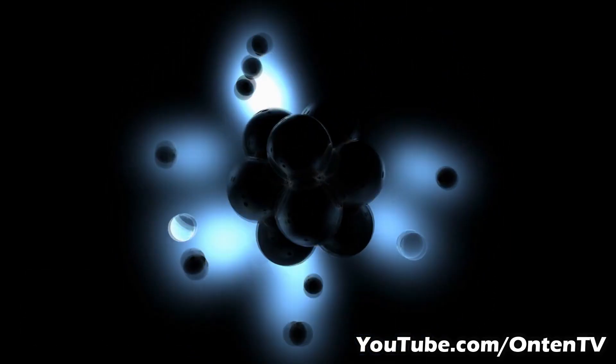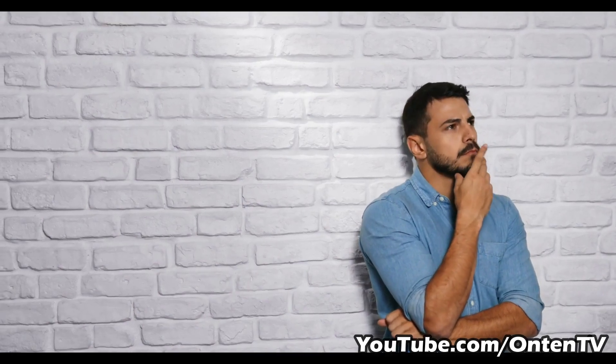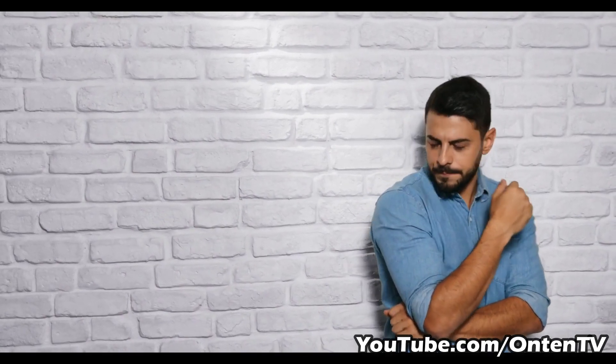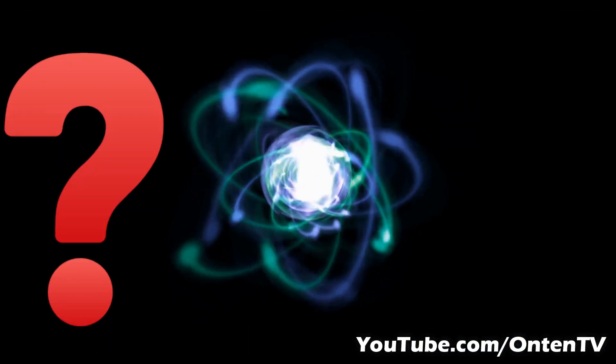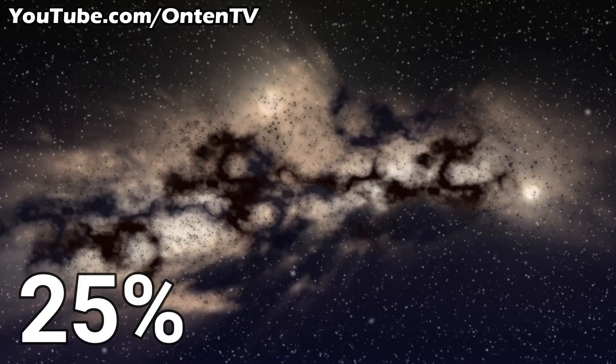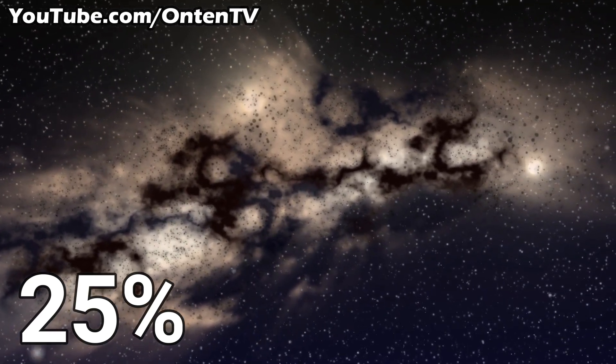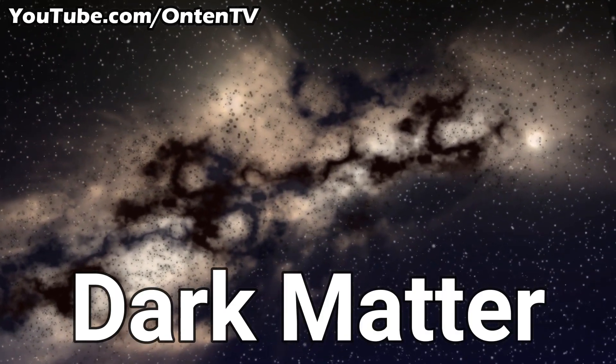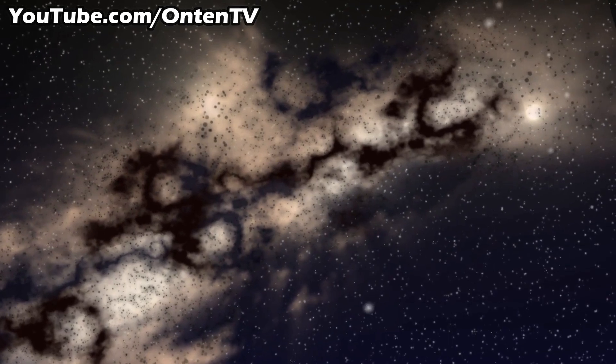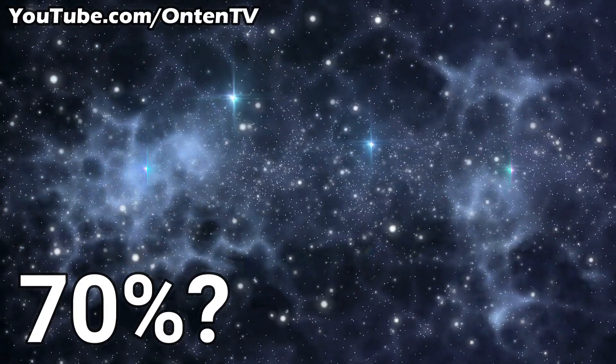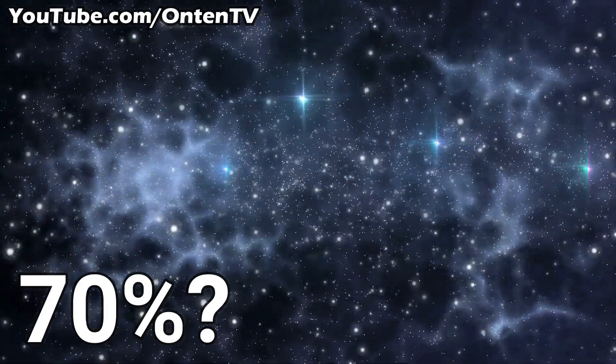Wait, what? So what is the rest of the world, the remaining 95%? So it's not made out of matter. 25% of the universe is made up of dark matter, so there's 70% still left. That 70% is made up of dark energy.